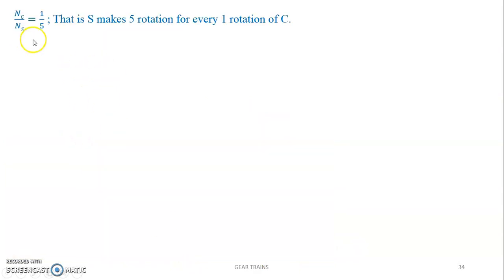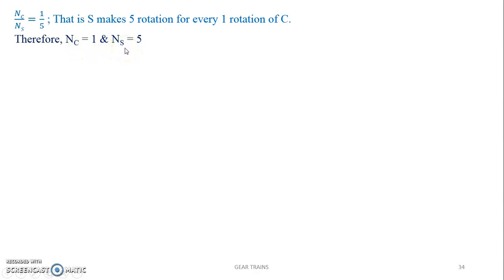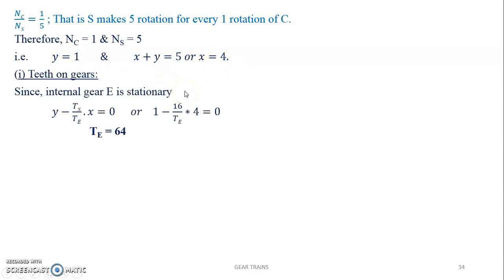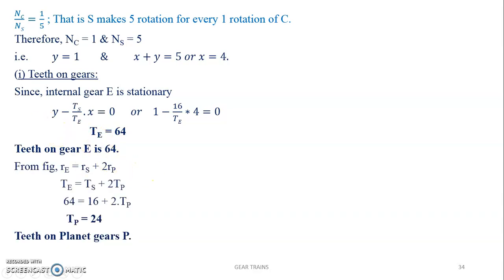The ratio of the speed of carrier C to sun S is 1 to 5, meaning S makes five rotations for every one rotation of the arm. From the table, y equals 1 and x plus y equals 5, so x equals 4. Since the internal gear E is stationary, we use the expression for E from the table and substitute the values to get the number of teeth on gear E as 64. From the sketch, radius of E equals radius of S plus twice the radius of P, giving us the number of teeth on planet gear P as well.